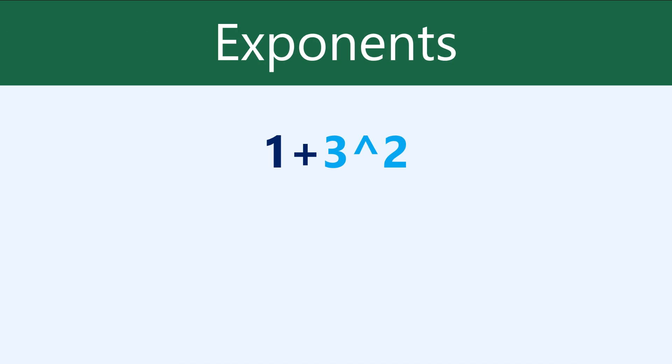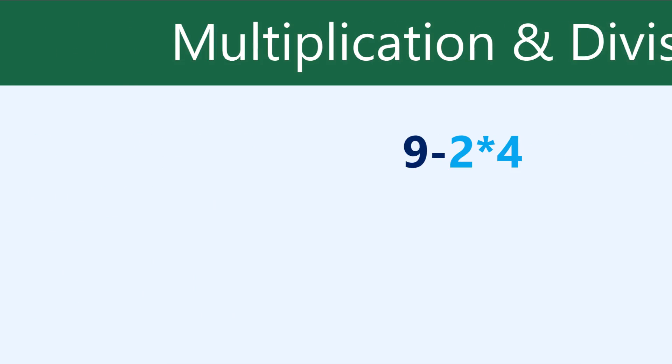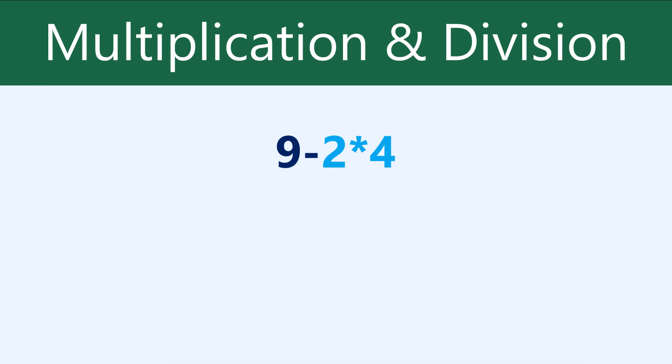This formula contains an exponent — 3 to the power of 2. We'll need to calculate that first before doing the addition. If you have multiplication or division, that'll come next. Here, we multiply 2 times 4 to get 8, and 9 minus 8 equals 1.